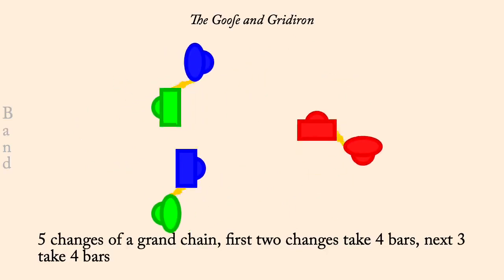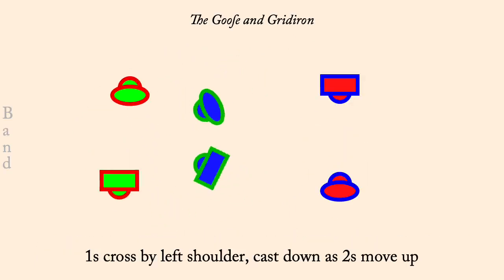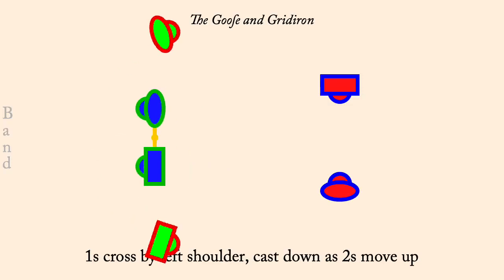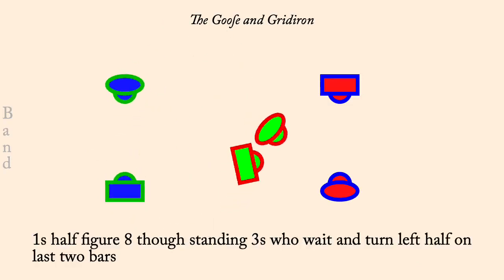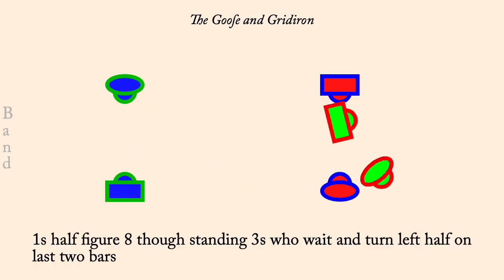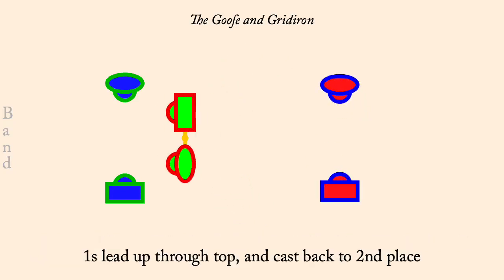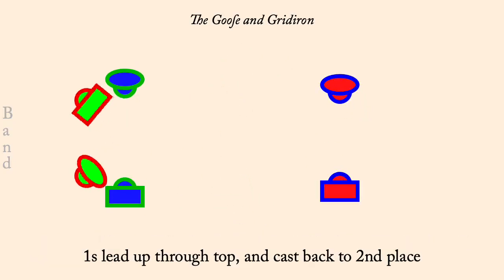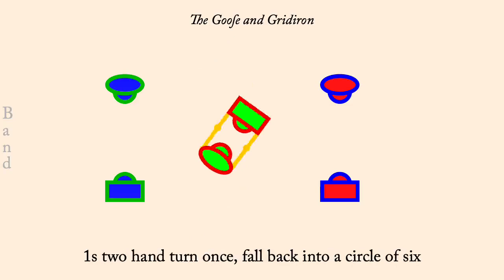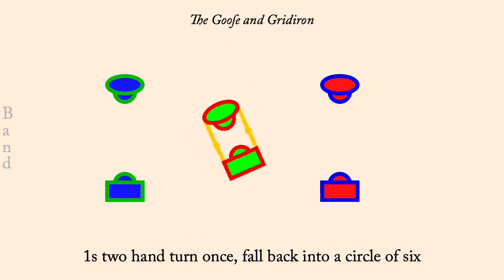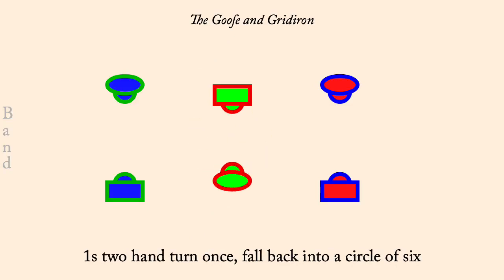Ones cross by left and cast down as twos move up. Ones half figure eight around threes, who then left hand turn half. Ones lead up through twos, cast back to middle. Ones two-hand turn. Circle six and back.